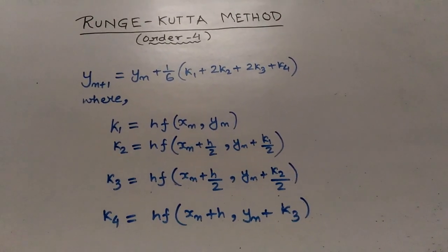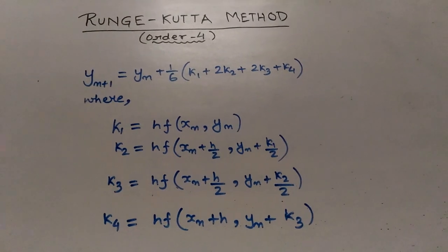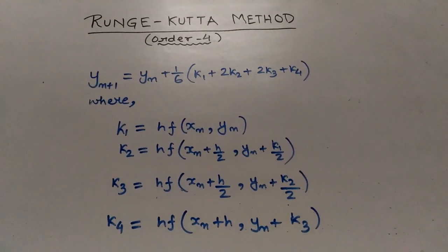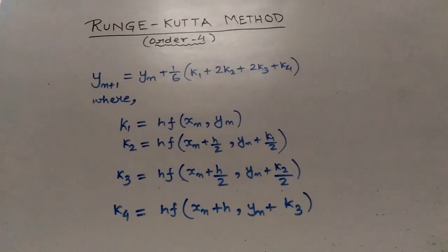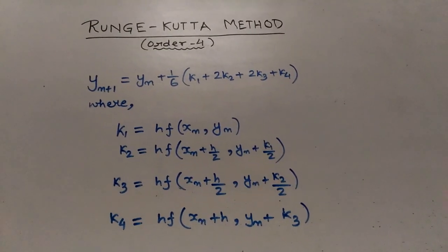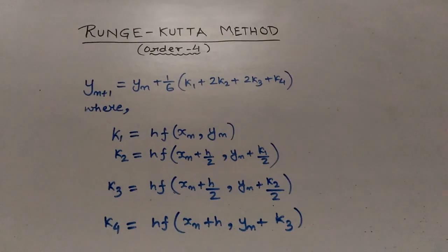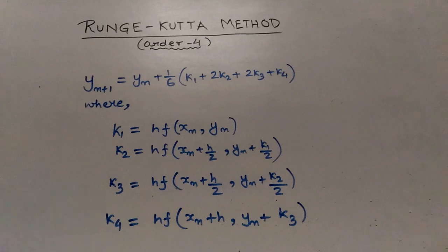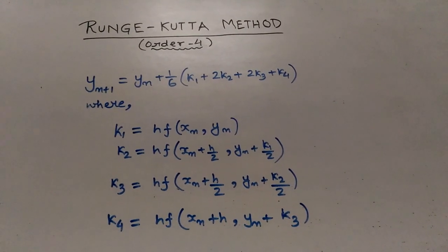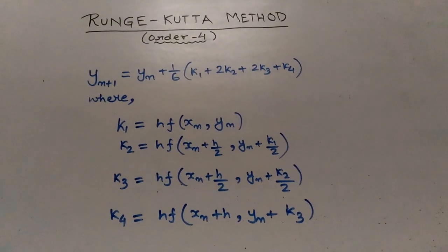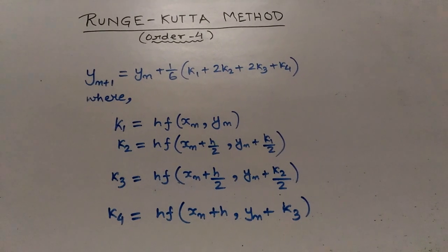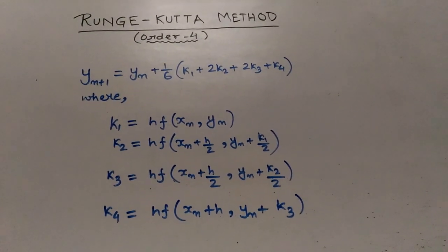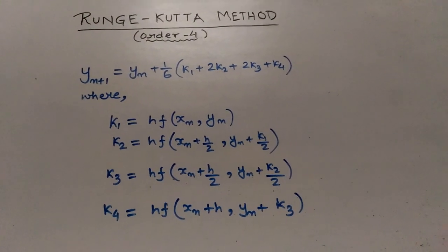Hello everyone, today I am going to discuss the 4th Order Runge-Kutta method, or the RK4 method. The working formula is: y_(n+1) equals y_n plus (1/6) into (k1 plus 2k2 plus 2k3 plus k4), where k1 is h into f(x_n, y_n).